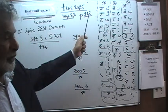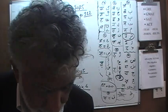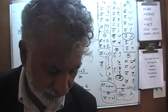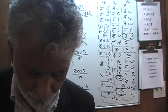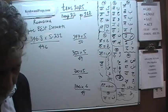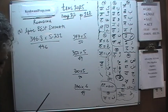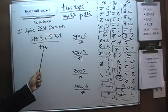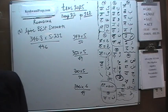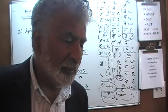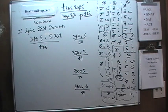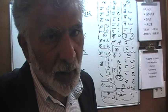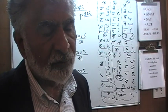Today is our lesson number 22, and we are on page number 112. There are five practice problems on page 112. We did problem number two yesterday, and today we'll do the remaining four. Let's begin with problem number one, which is already on the blackboard. The question: we are given 346.8 × 5.231 ÷ 49.6 and we are being asked to give the best estimate. I also wrote down the answer choices.